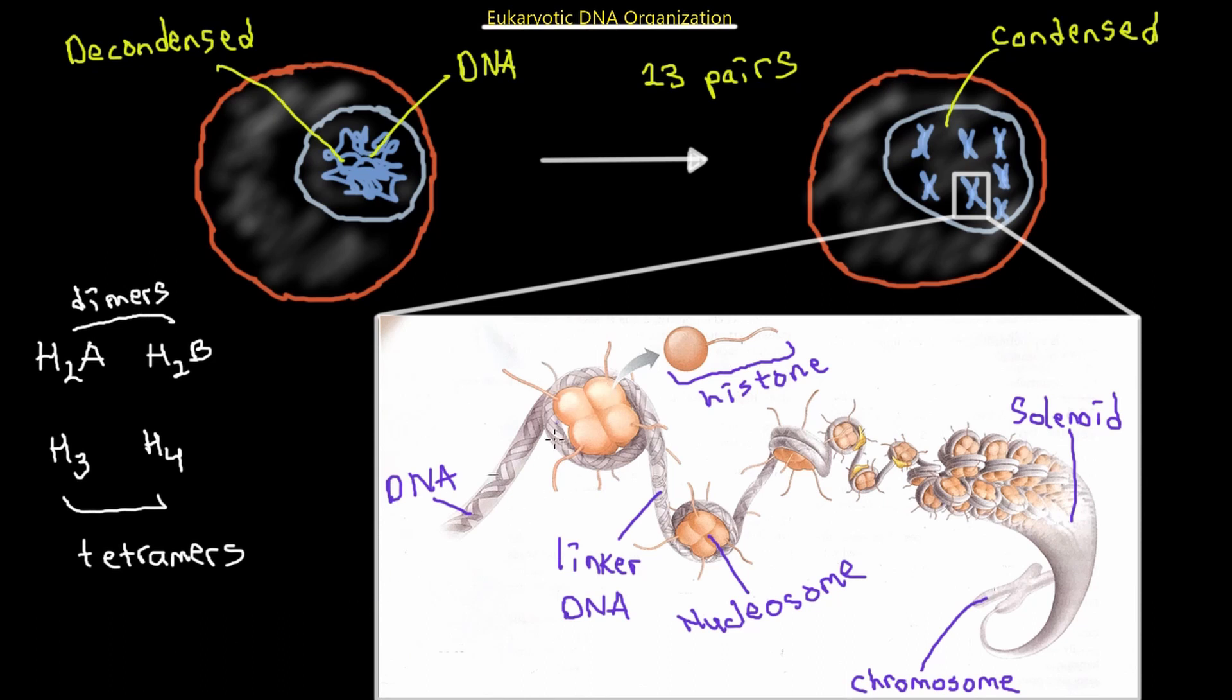And now each of these nucleosomes are connected via linker DNA. And these little yellow structures right here, these little yellow ones, these are called H1 histones. So they're H1 and it binds to the nucleosome and the linker DNA causing the nucleosomes to form this coiled structure and make the solenoid. So that's the importance of H1.